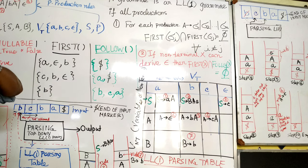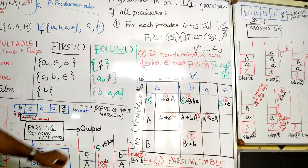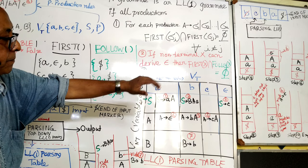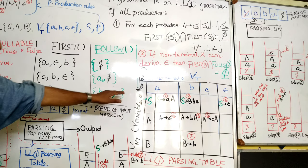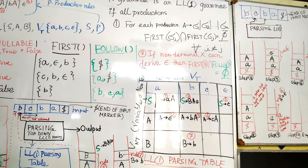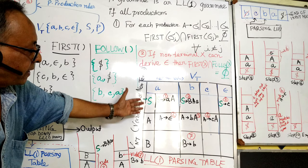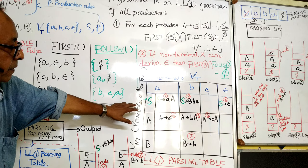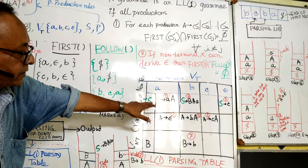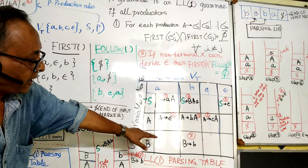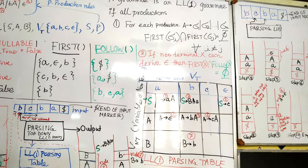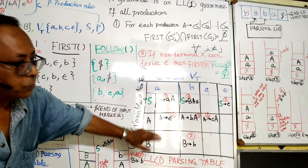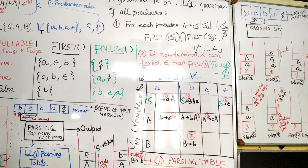For LL1 parsing, we have to create a parsing table. The parsing table columns would be the terminals including epsilon, and the rows should be all the variables including the start. For every variable and terminal there should be one and only one rule. There may be no rule, that is okay, but if a rule is there, there should be only one.